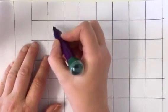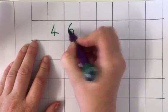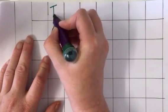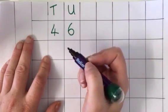If I give an example calculation of 46 add 25, I'm going to write 46 first. I've got tens and units there. It is really important to get everything in the correct place value column.